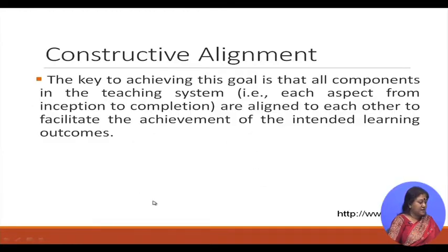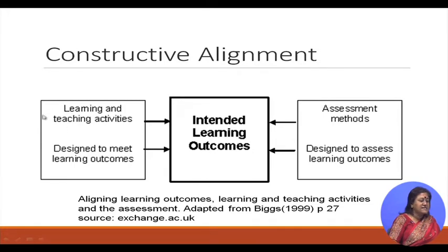Constructive alignment was developed by Biggs in 1999. It is a theory of learning that begins with the premise that the learner constructs his or her own learning through relevant learning activities. The intended learning outcome is central, and there should be a link between learning and teaching activities and the assessment — both designed to meet and to assess the learning outcome. There should be clear alignment.